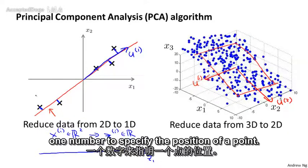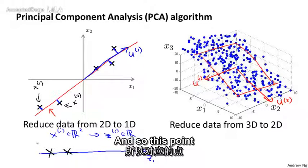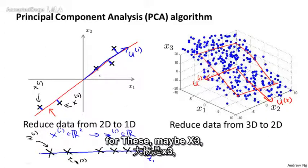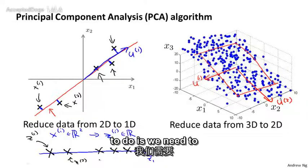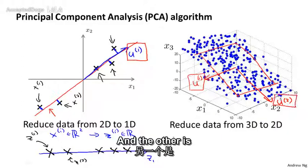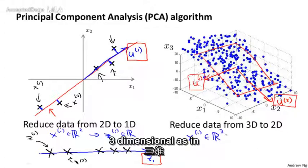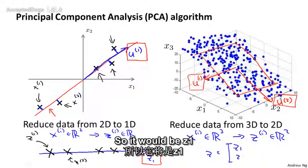We need only one number to specify the position of a point. So if this example was x1, maybe that gets mapped here; if this example was x2, maybe that example is mapped here. This point would be z1 and this point would be z2. Similarly, x3, x4, x5 get mapped to z1, z2, z3. So what PCA has to do is compute two things: one is to compute these vectors u1 and u2, and the other is how to compute these numbers z. In the example on the right, we would be reducing data from three-dimensional — xi in R³ — to zi which is now two-dimensional, so these z vectors would be two-dimensional.